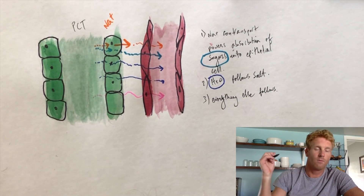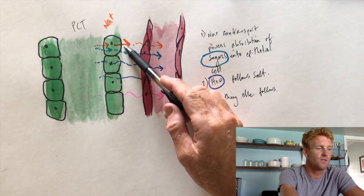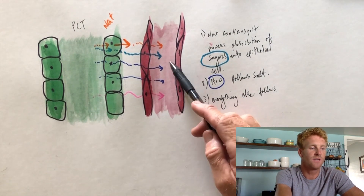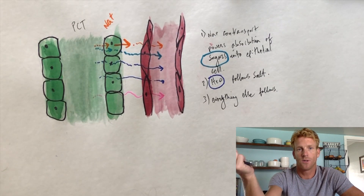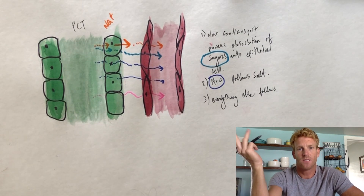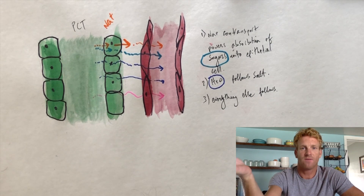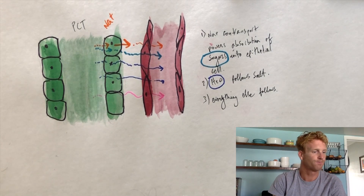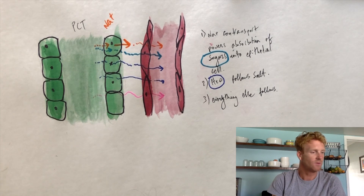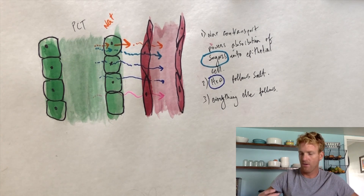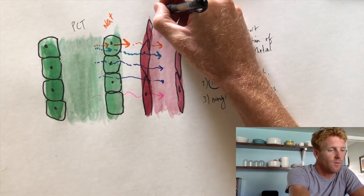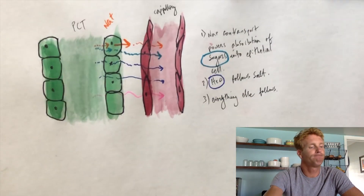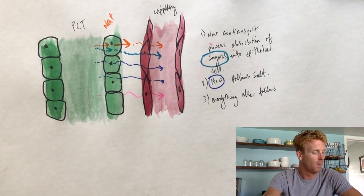That increase in concentration causes lipids, hormones, and other ions to passively diffuse from high concentration to low concentration — shown in pink — into the peritubular capillary as well. So the only thing we had to actively move was sodium. Once we did that, everything else followed: water, sugars, nutrients, lipids, hormones — everything we want to keep passively moved where we wanted it to go. The movement of sodium is really what powers reabsorption of everything else into the peritubular capillary.